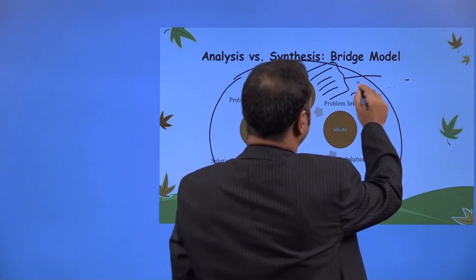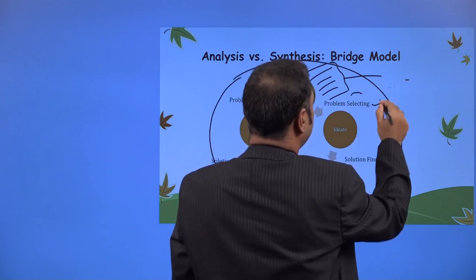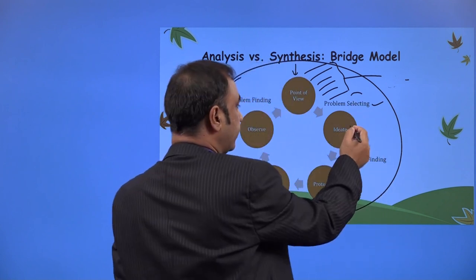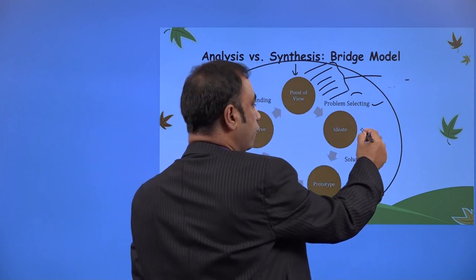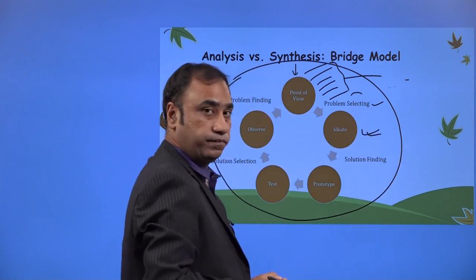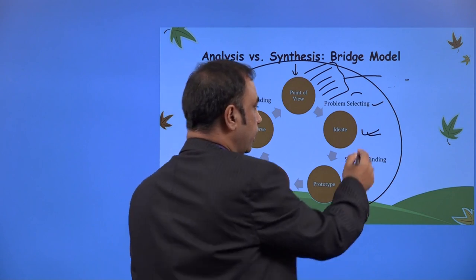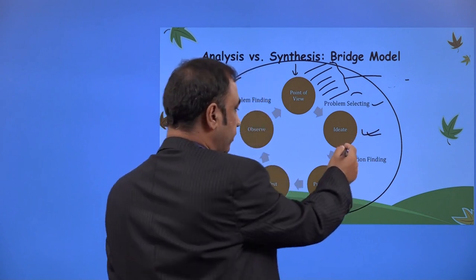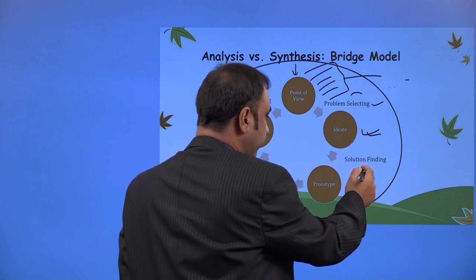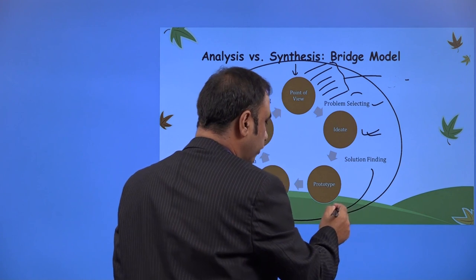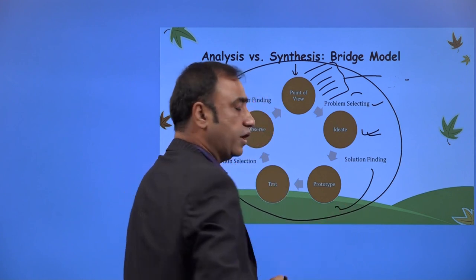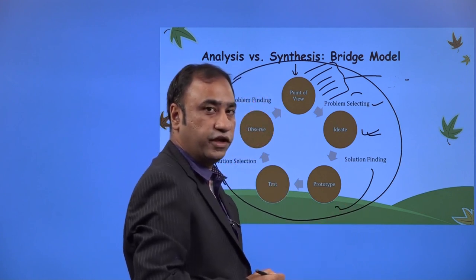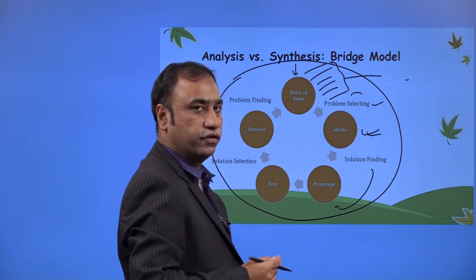We understand these problems and then we select them. Based on the selection of the problems, we select a few, then we ideate those problems. In the ideation process, we try to find the solution. Then we find the solution, and once we find the solution, we understand the process of creating that particular solution.